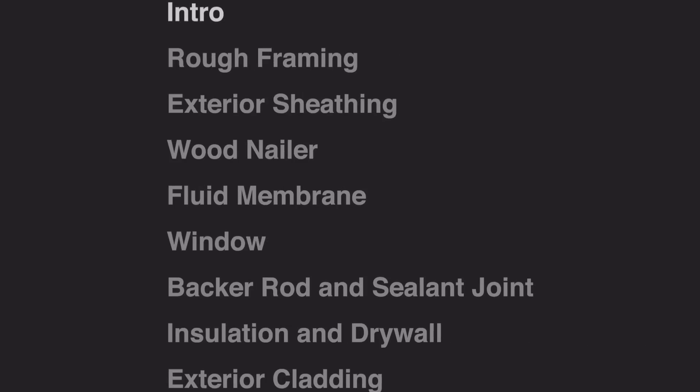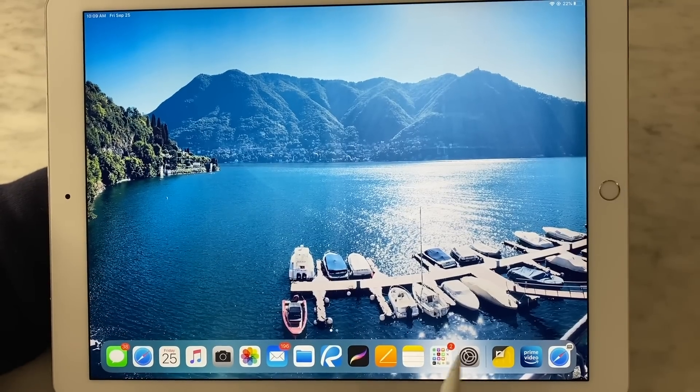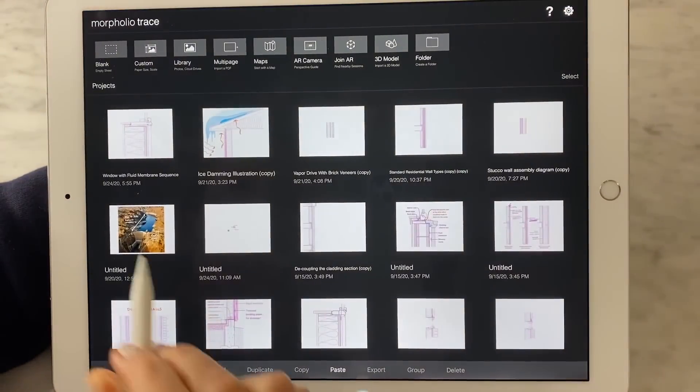Now I'm going to take you through my process. I'm going to take you through drawing a window sill detail. This is going to be most appropriate for those of you who work on North American framed construction. The first thing we're going to do is open up Trace and start a new document.